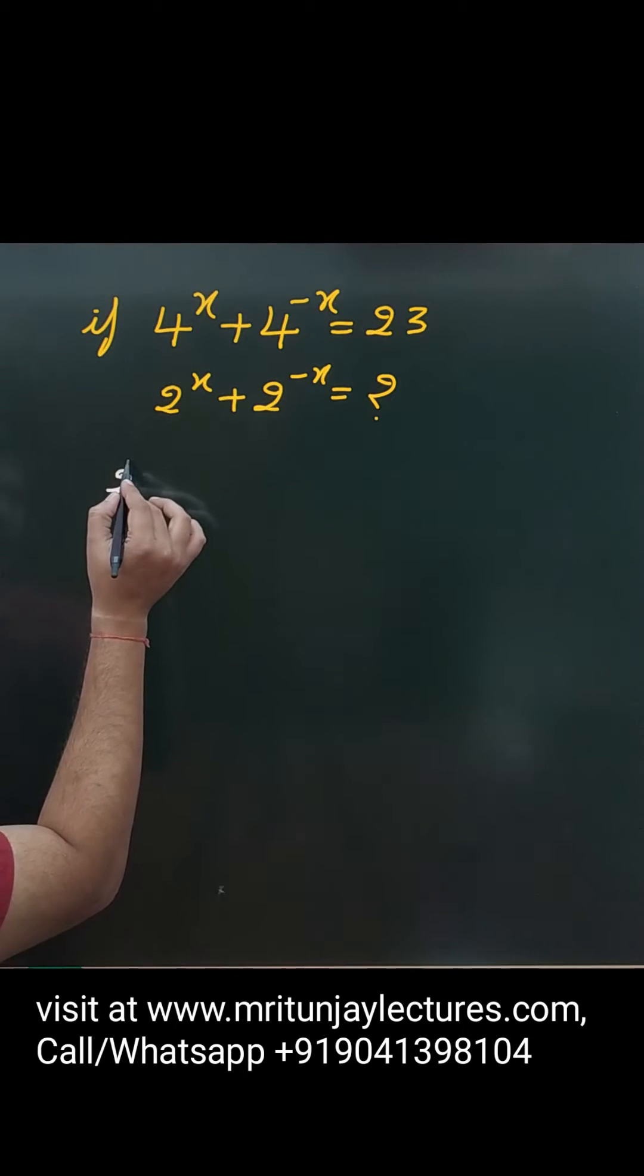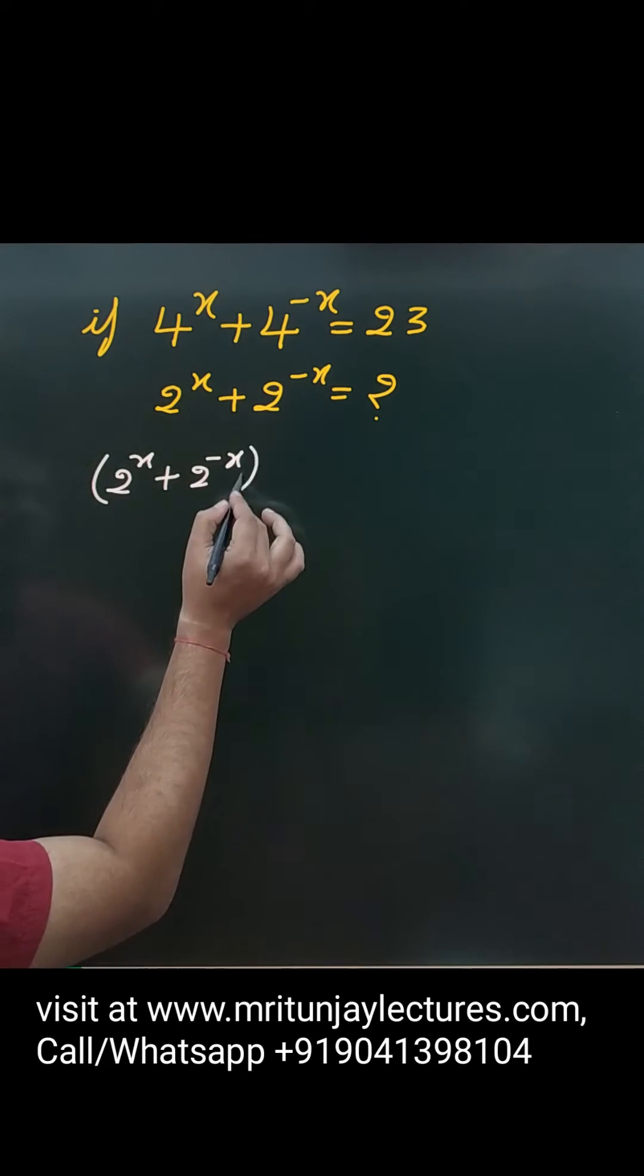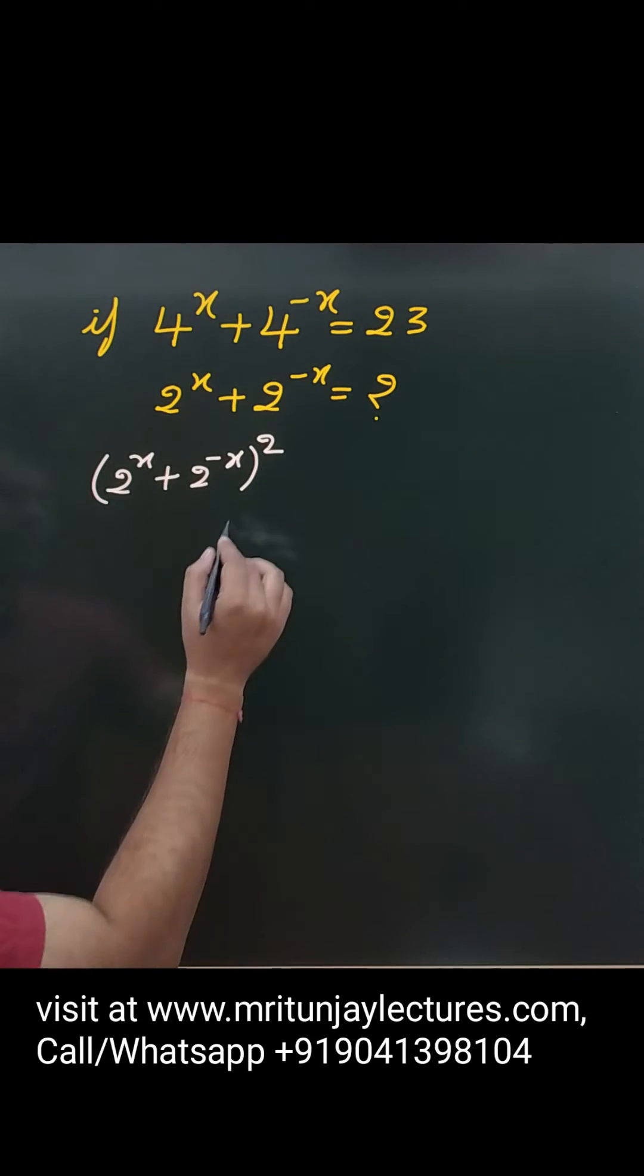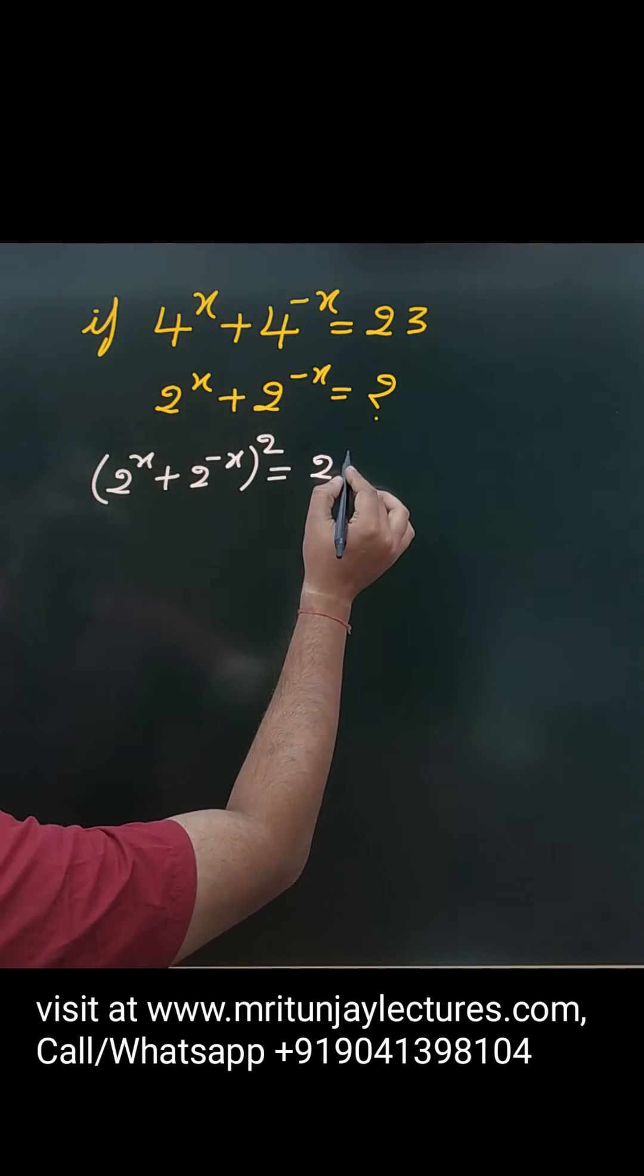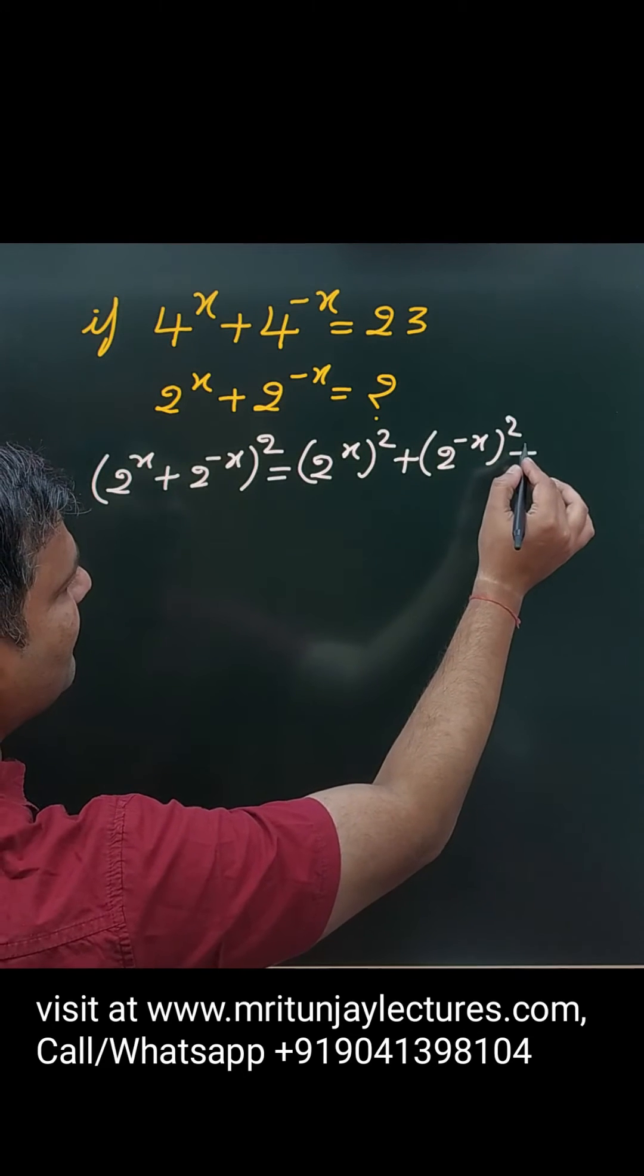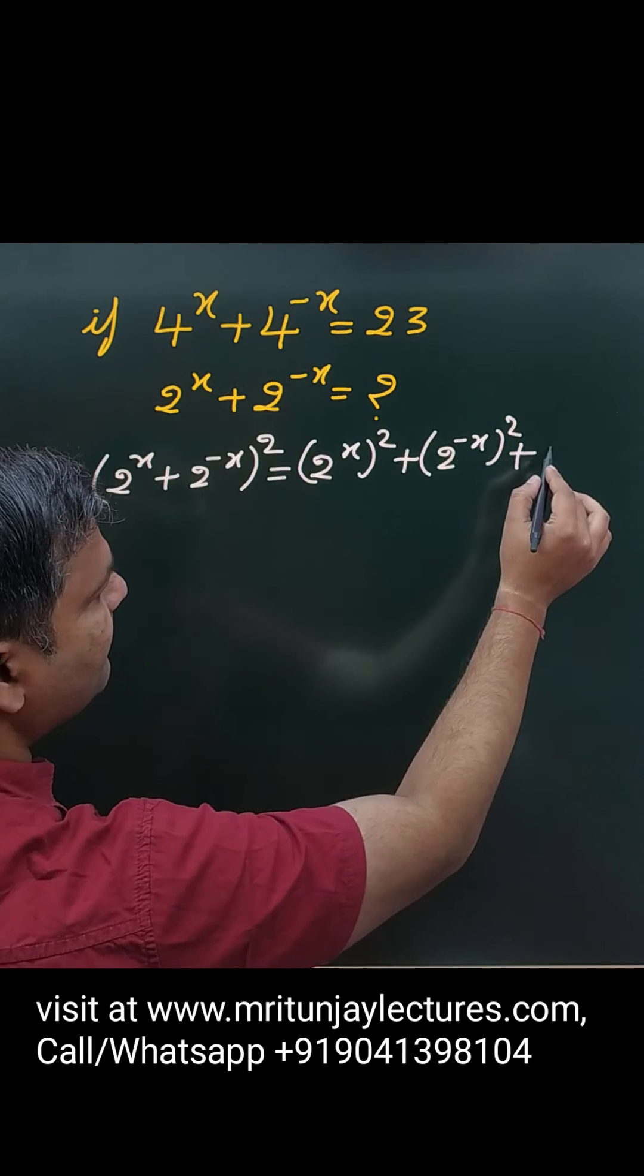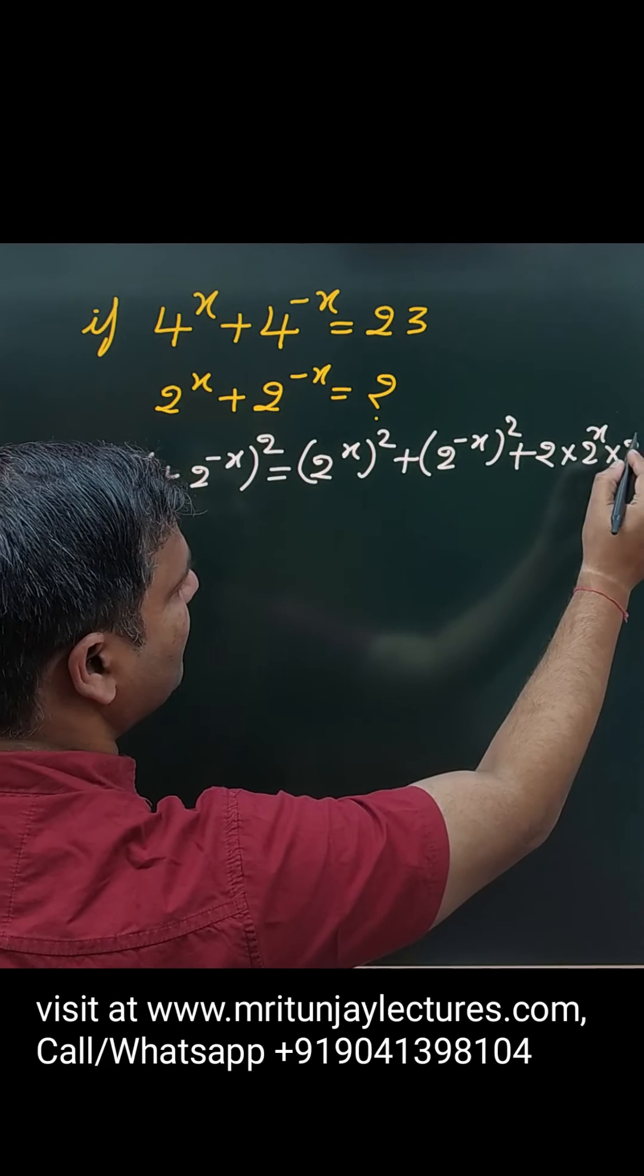Simply, you know that 2 to power x plus 2 to power minus x, if we're squaring, then what about that value? Simply written here: 2 to power x, that is whole square, then 2 to power minus x to the whole square, plus 2 into 2 to power x into 2 to power minus x.